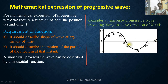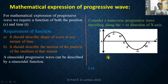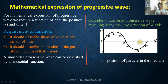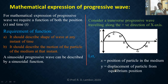Different particles at their positions are represented by the coordinate x. The particles oscillate and vibrate parallel to the y-axis. So the displacement of a particle from its mean position is represented by the y-coordinate. In this transverse progressive wave, x represents position of the particle in the medium, and y represents displacement of the particle from the equilibrium position.